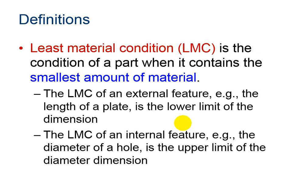Least material condition is the opposite. It would be the condition when a part contains the smallest amount of material. For example, the least material condition for an external feature, the length of something, is the lower limit of the dimension. And the least material condition of an internal feature, for example, the diameter of a hole, is the upper limit of the diameter dimension. Because that would give us the smallest amount of material.